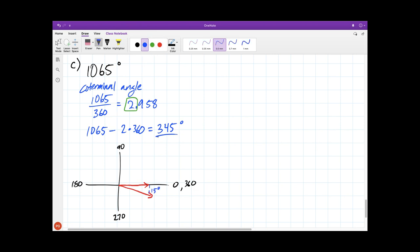So our terminal arm would just be a little bit shy of back to 360 degrees. Now remember, we're not drawing 345 degrees, we're drawing 1065, which is 2 full turns plus this. So we need to draw 1 full turn, 2 full turns, and then go all the way to our terminal arm. So your spiral should look like this.